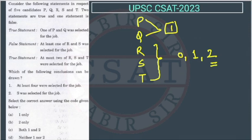Now, let's read the false statement. The false statement is saying at least one of R and S. So, at least one means it is saying that R will get selected or S will get selected or both will get selected.